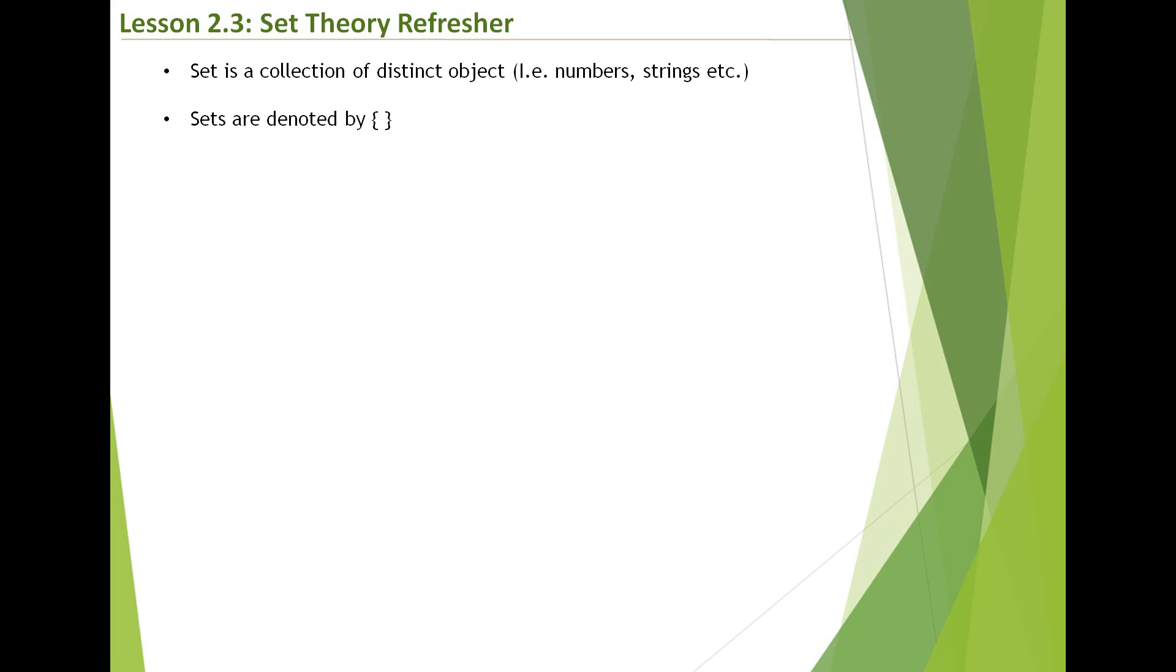Sets are generally denoted by flower brackets. And we've already seen when we write our set expressions, we do have flower brackets. Let's go through some basic set operators so that you're more comfortable with them. The first one is the intersection. You can think about intersection as like AND as well. Let me just quickly draw something and show you.